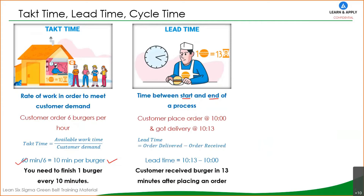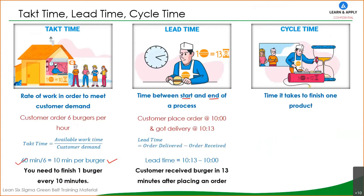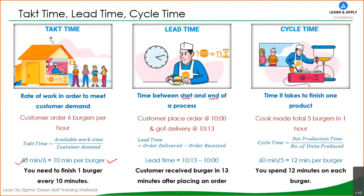Now we know about takt time and lead time. Let's talk about cycle time. Cycle time is the time taken to finish one product. In our example, the cook makes five burgers in one hour. Cycle time is net production time divided by number of units produced — 60 minutes divided by five — giving a cycle time of 12 minutes per burger. So we are spending 12 minutes on each burger; that is our cycle time.